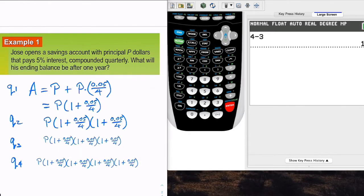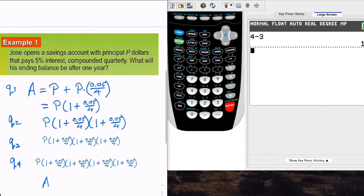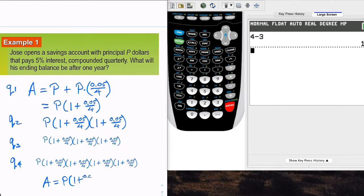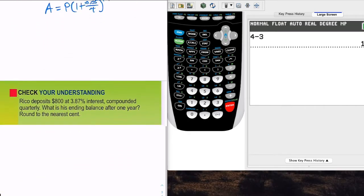And so the better way to really write that is in our compound interest formula, that this is A equals P times 1 plus 0.05 over 4, and that raised to the 4 times 1 power, because it's just in one year. But this is what happens, and so we did it 4 times, and so that's how that goes.